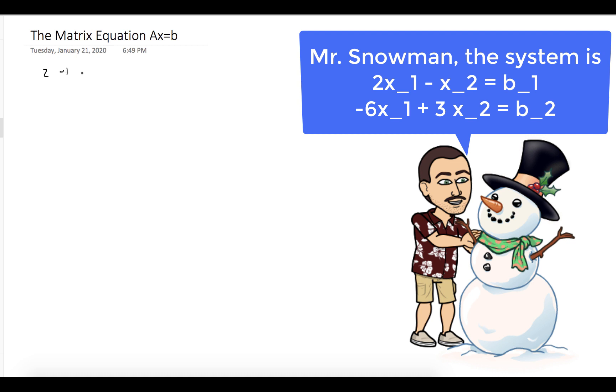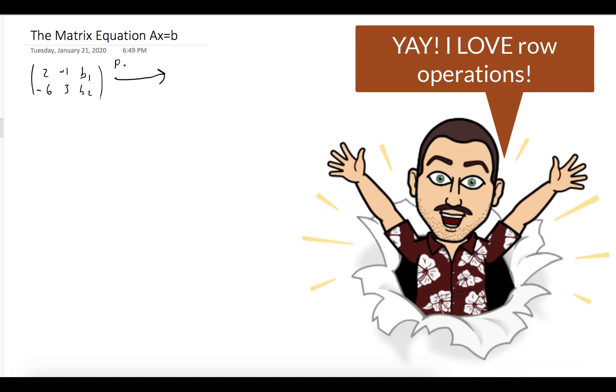So we'll start by writing down the augmented matrix for the system. It's 2, negative 1, b_1, negative 6, 3, b_2, and we can perform elementary row operations.